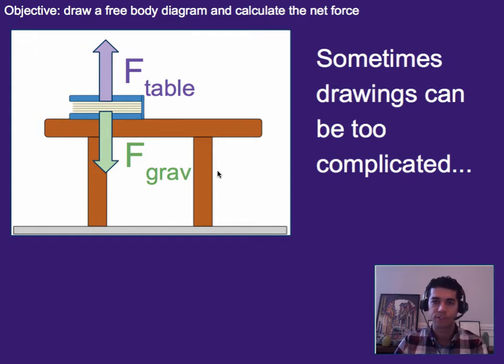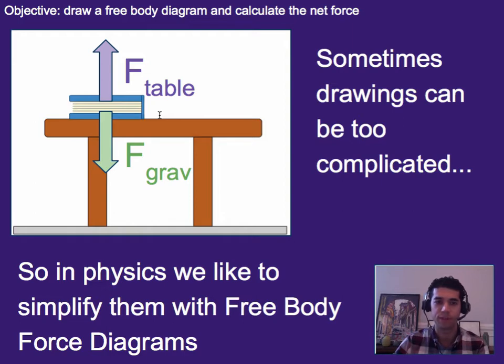So sometimes drawings can be too complicated. For example, if I want to draw this diagram of a book, it's a pain to go ahead and draw the table as well as the book and things like that. So usually in physics, we're going to simplify things.